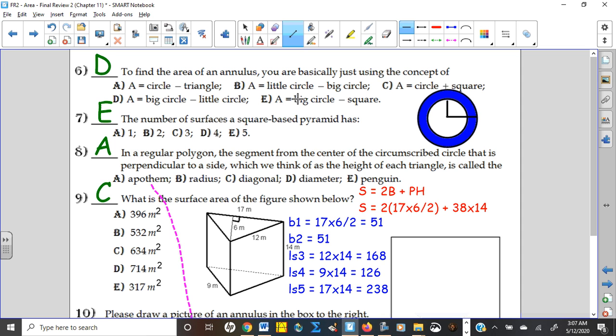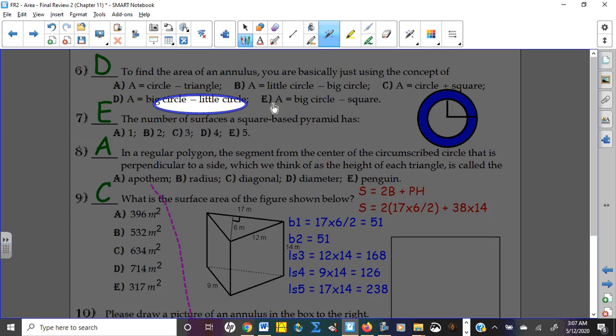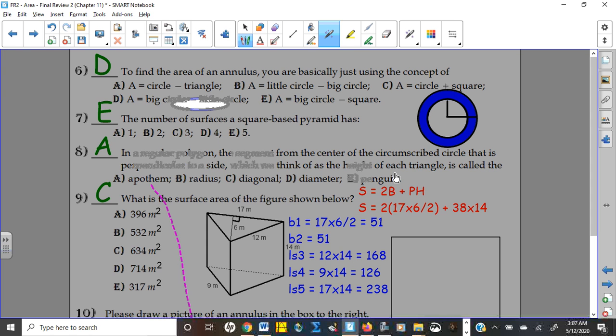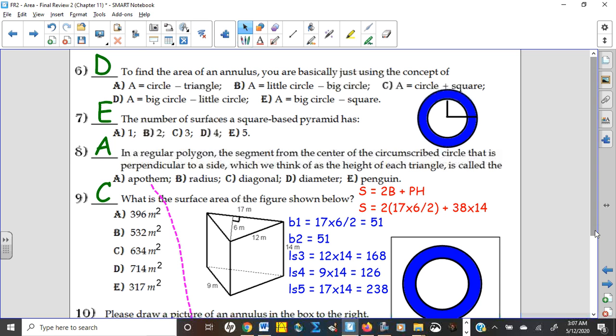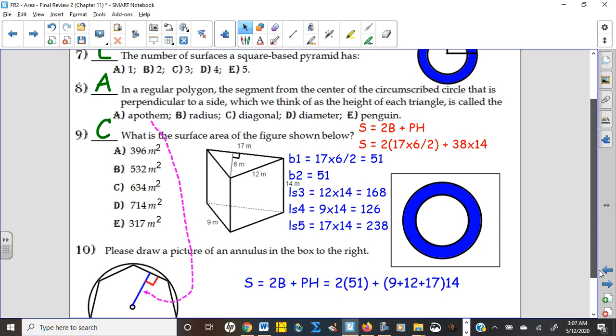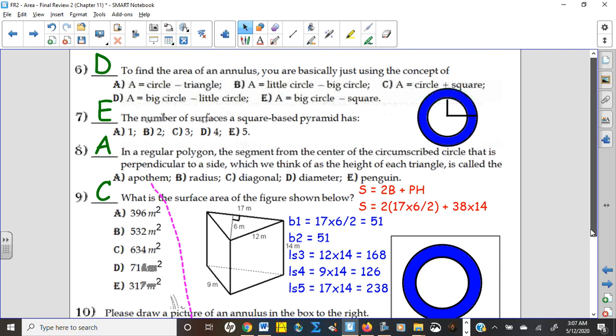And so it's just basically big circle minus little circle, which would be D here. And if you drew that same type of picture for number 10, that would have been the picture that you wanted for an annulus. Make sure you remember the little radius always has to start at the center. Some people get confused and think the little radius is the distance between the two circles.